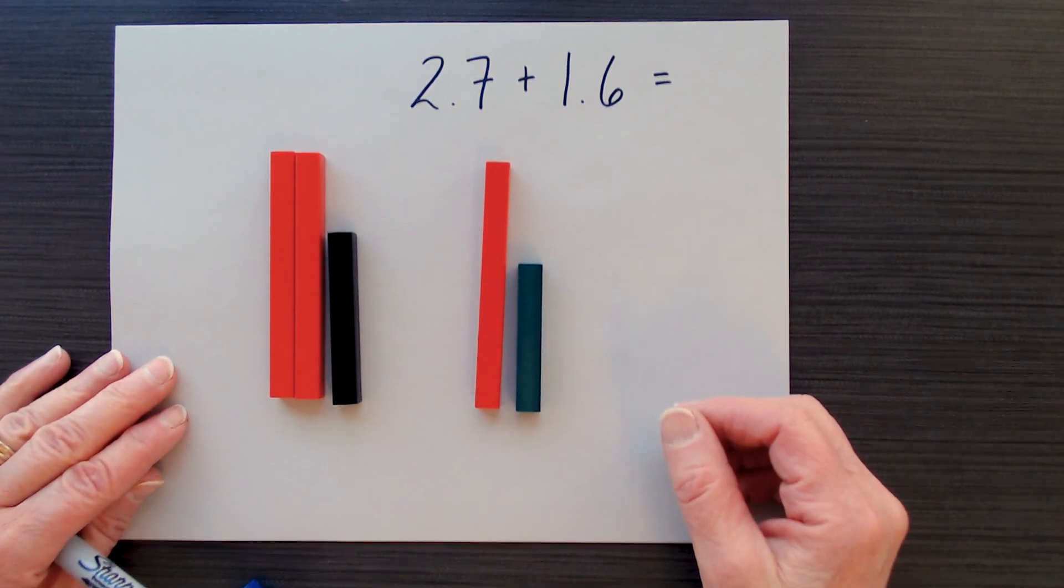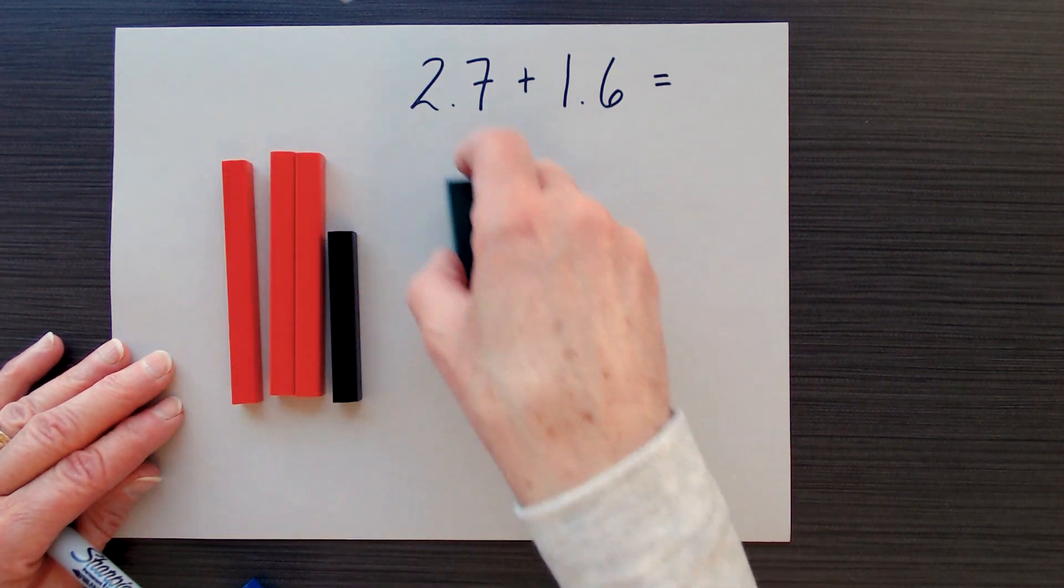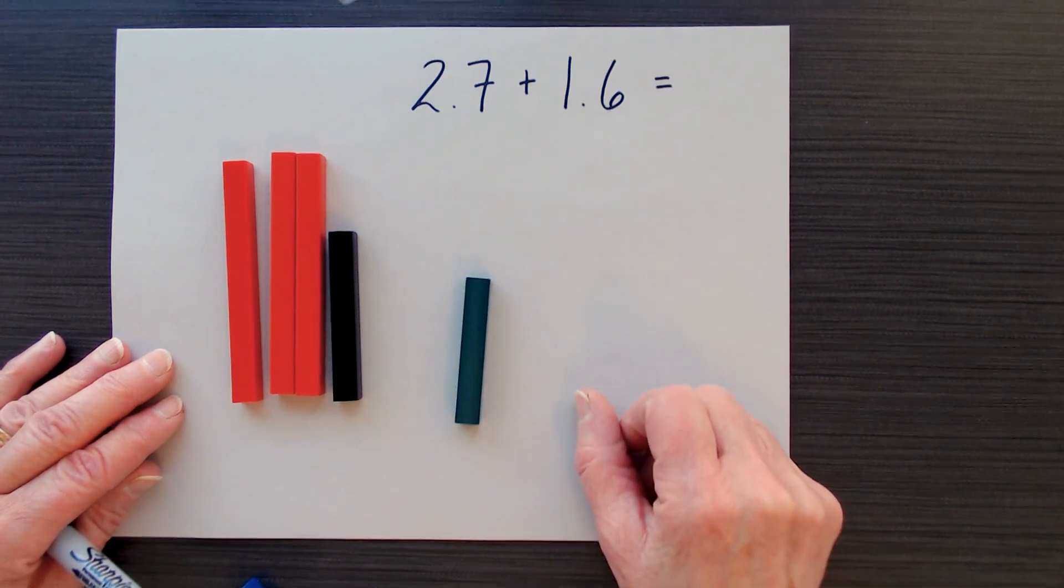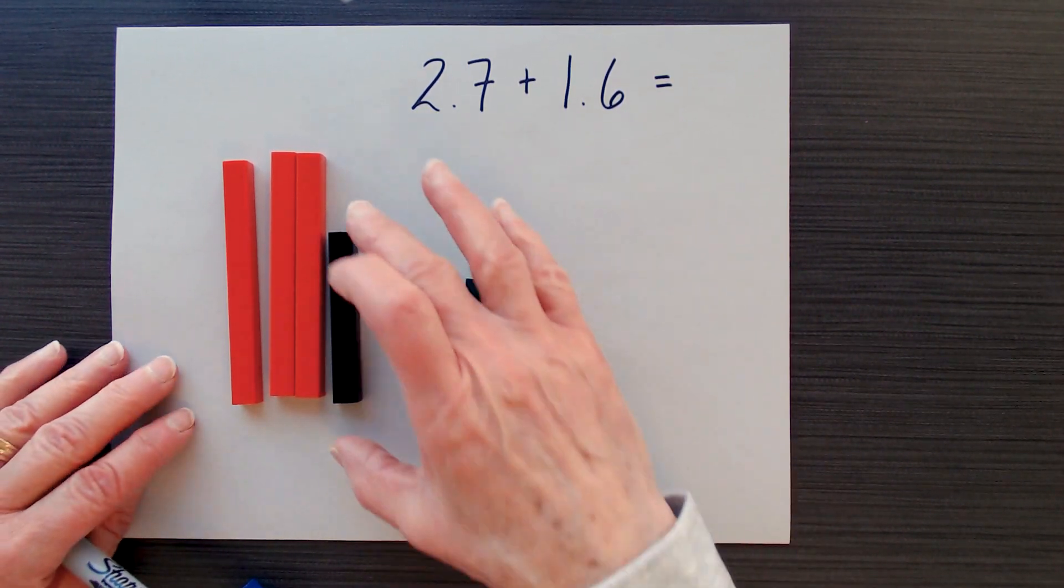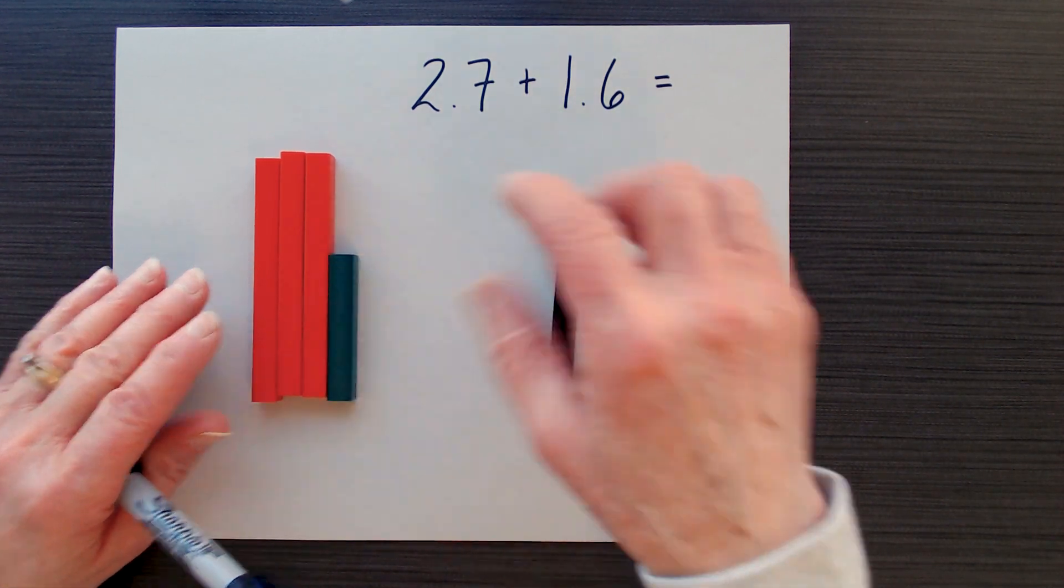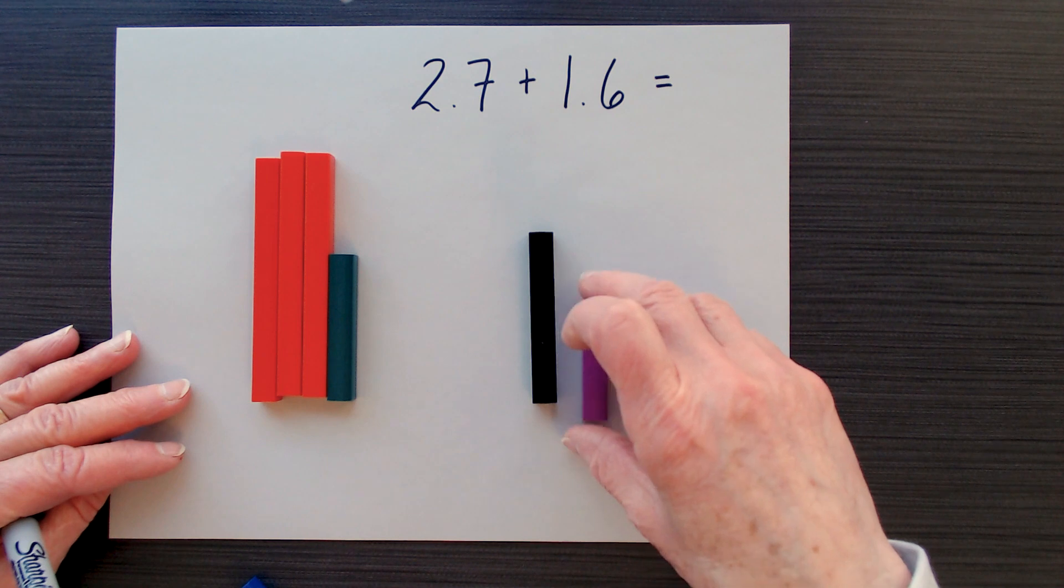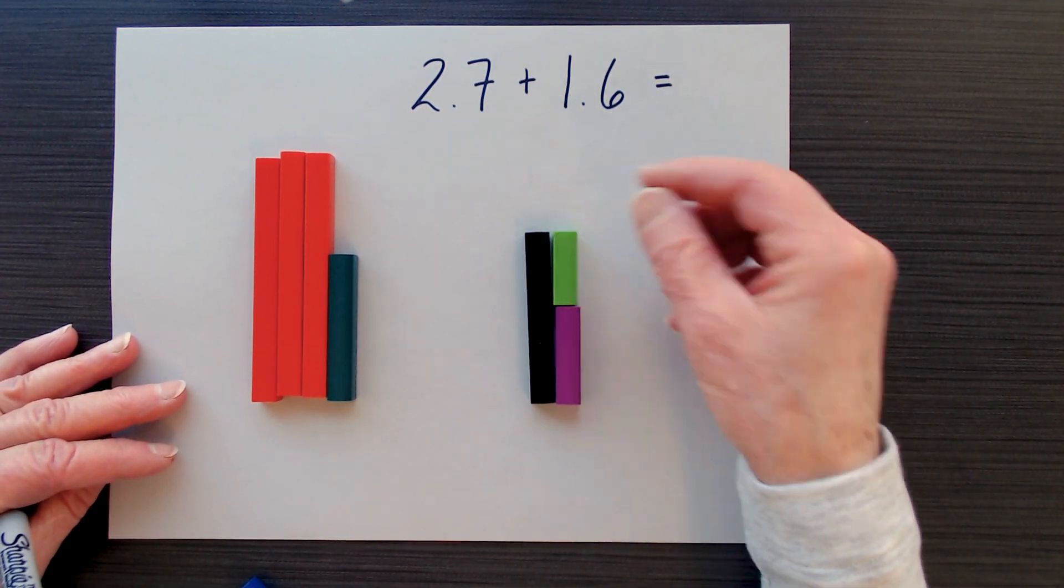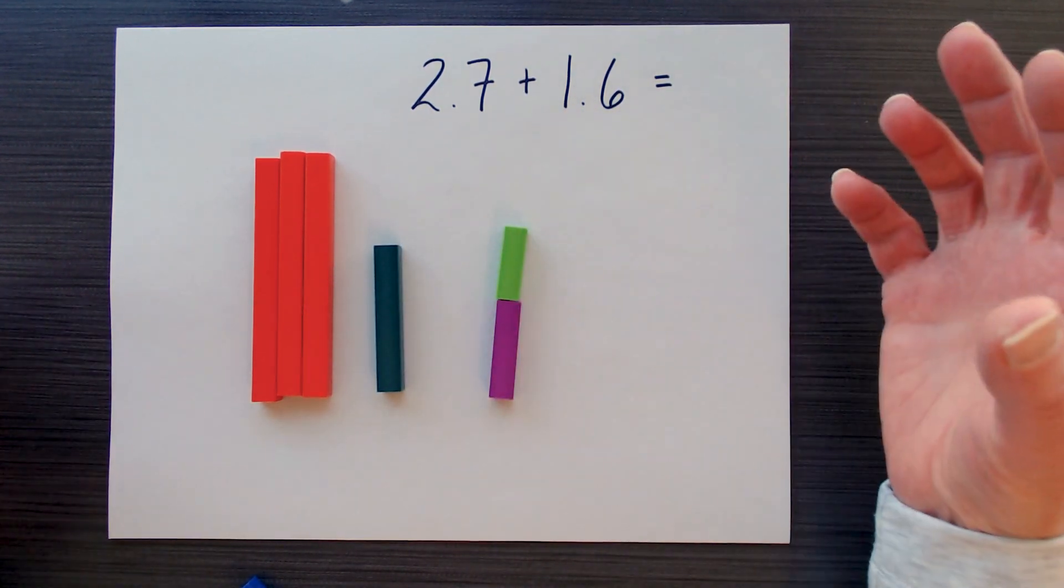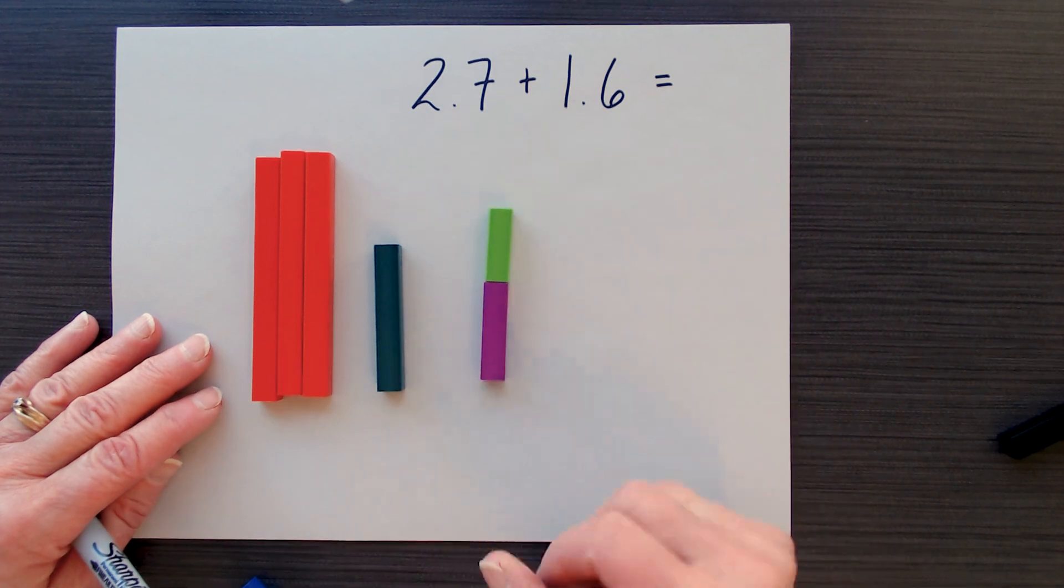So now all I need to do is put them together, but that might be a little challenging. So let's do a little bit of decomposing here. Let's take the 7 tenths and let's change it to 4 tenths and 3 tenths. So we have the exact same amount, but all we've done is we've just changed the blocks.